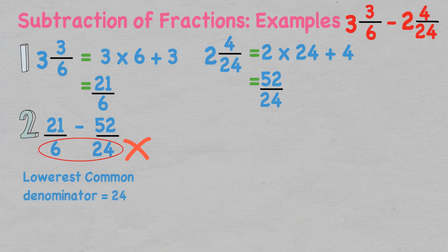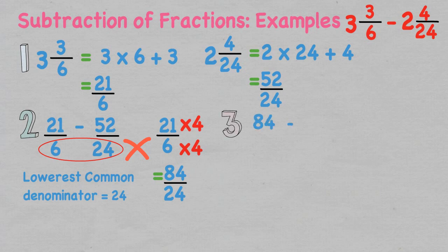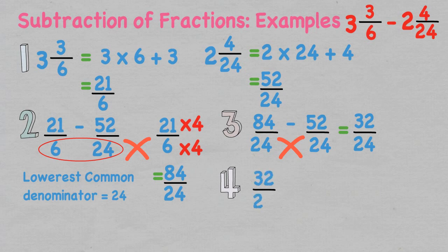So we now have 21 over six take 52 over 24. The fractions aren't alike, so we need to find the lowest common denominator — in this case it is 24, as both denominators go into 24. To get 21 over six to over 24, we multiply the denominator by four, and whatever we do to the denominator we must do to the numerator. This equals 84 over 24. Now the two improper fractions are alike, so we subtract the numerators: this equals 32 over 24.